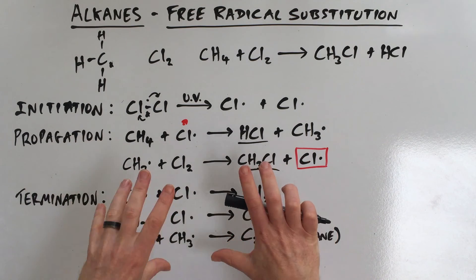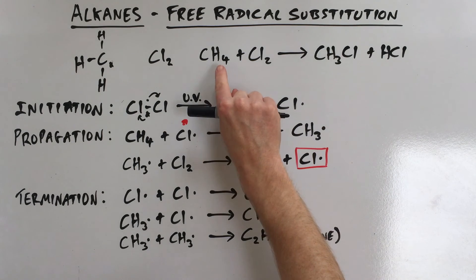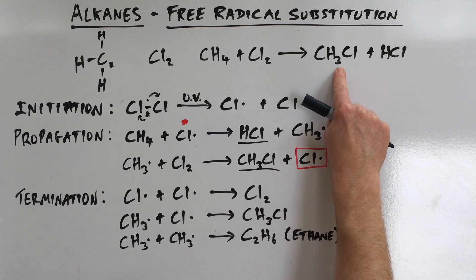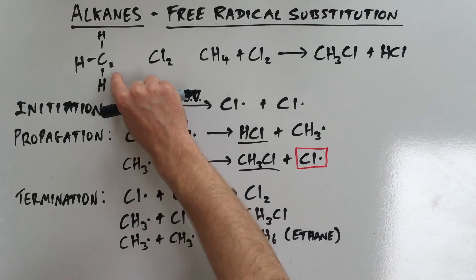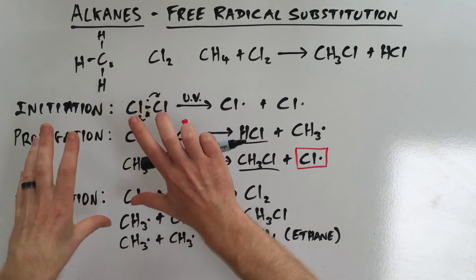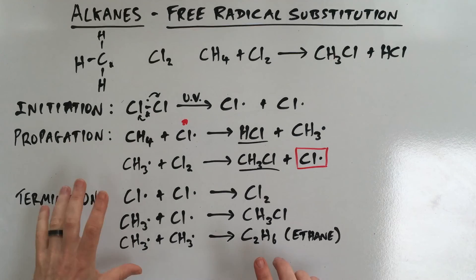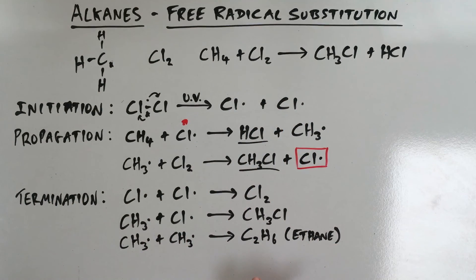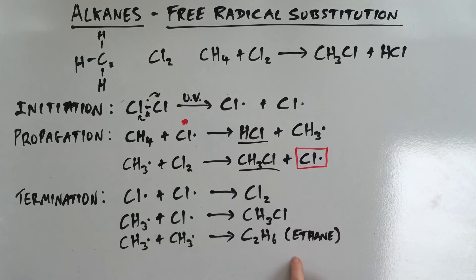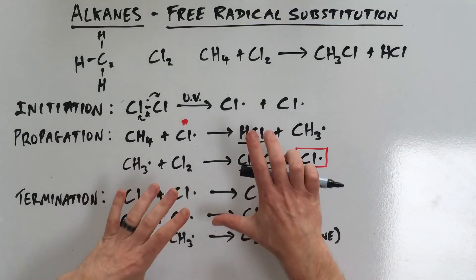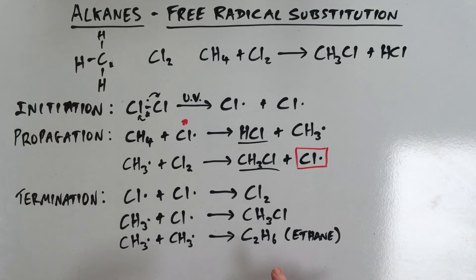This is the general free radical substitution reaction, where we've substituted a hydrogen for a chlorine. This could also happen with bromine, or with ethane, propane, or any other alkane. You have to take this as a general series of reactions and adapt it to whatever you're given in a question. If it's ethane you're working with, you're going to get chloroethane as a product, and the larger termination product would be butane, for example. There are examples of this on the worksheet.